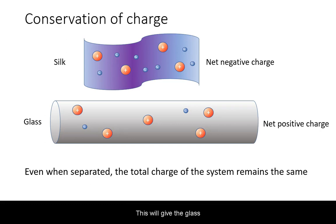This will give the glass a net positive charge and the silk a net negative charge, but again, the total charge of the system is conserved.